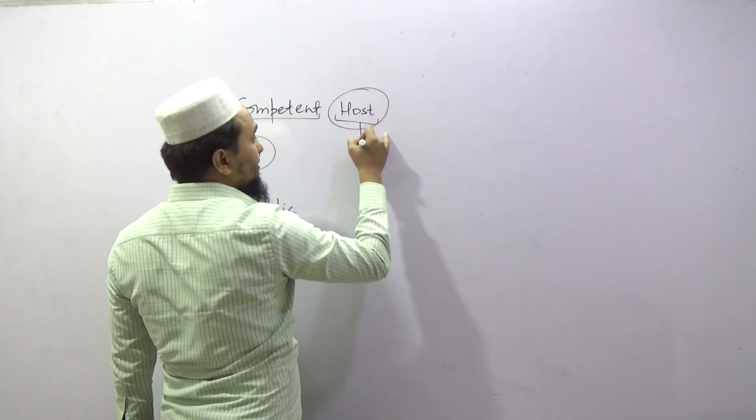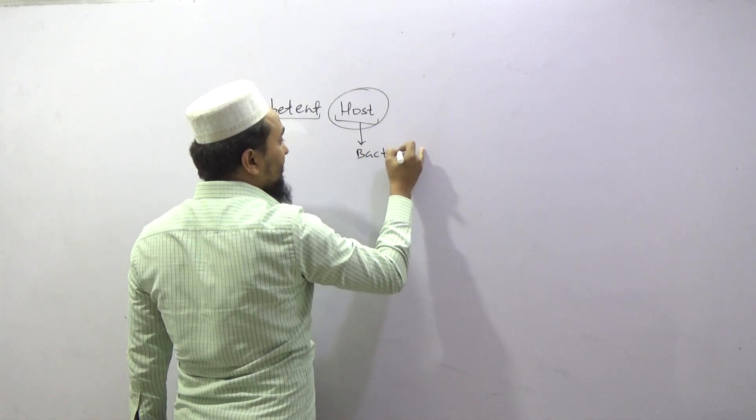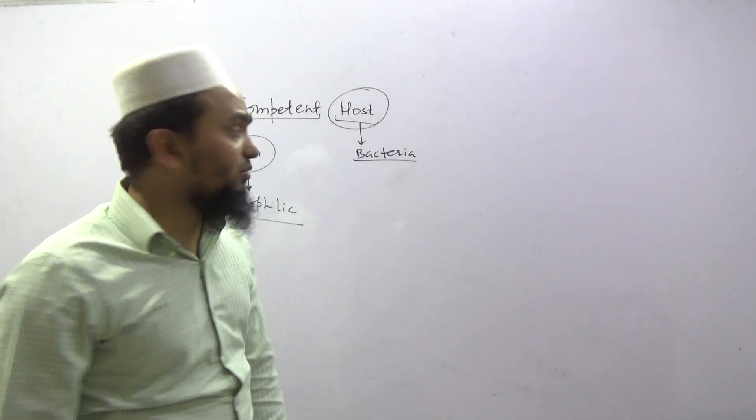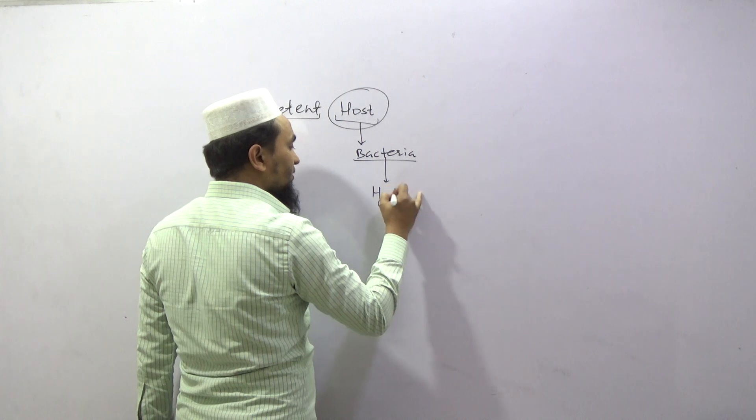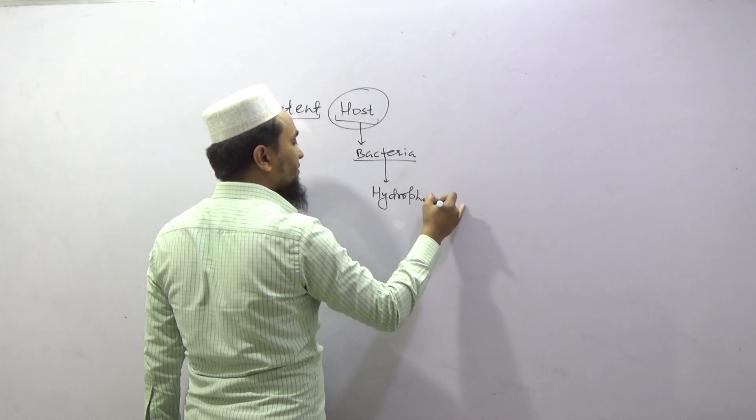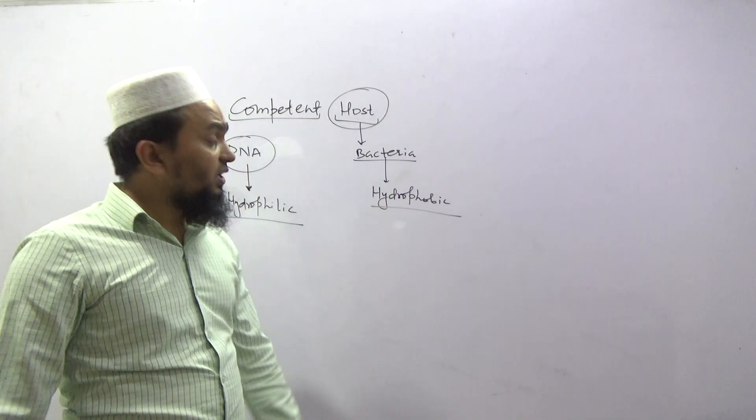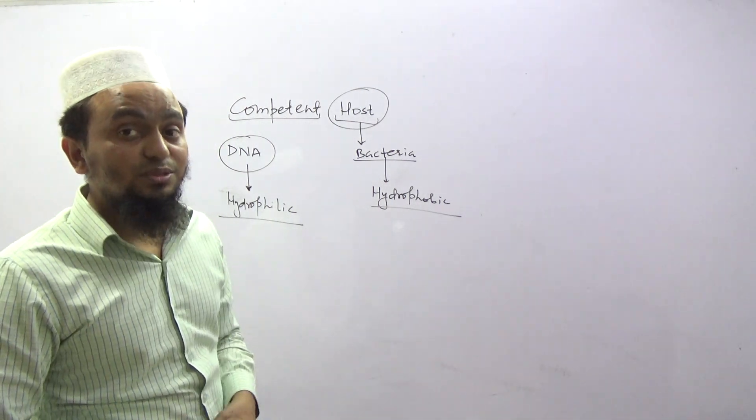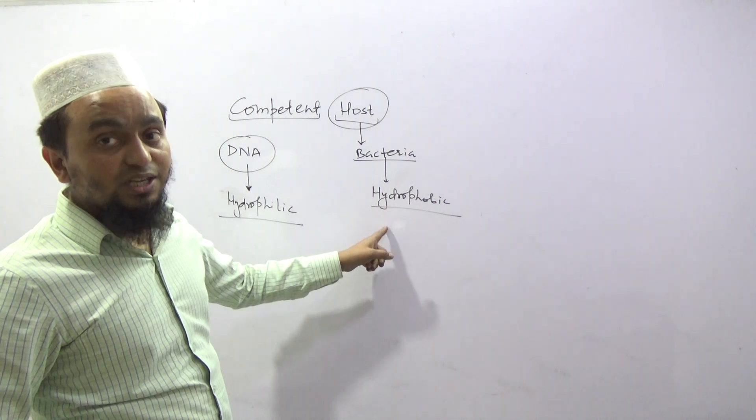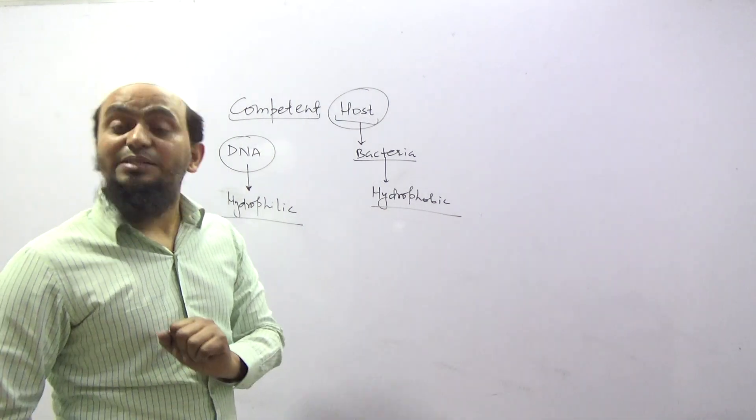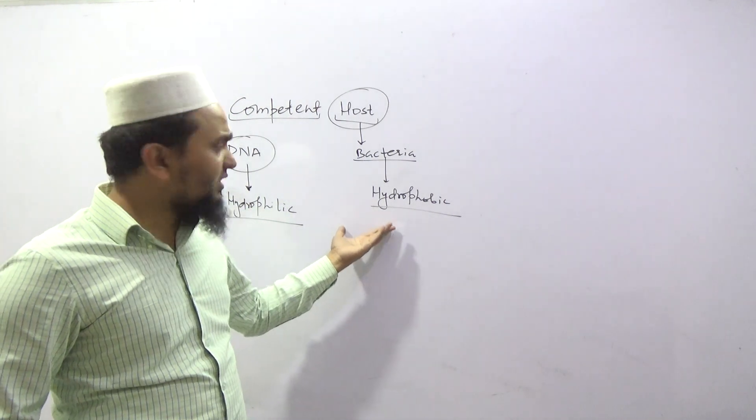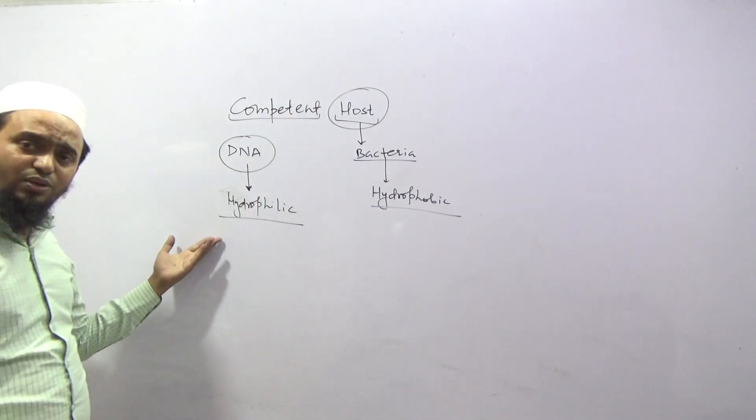However, our host, the bacterial host. The bacteria has a membrane. The membrane is made of phospholipid. How is the phospholipid? Hydrophobic. What is hydrophobic? Hydrophobic is opposite to hydrophilic. This is ionic.